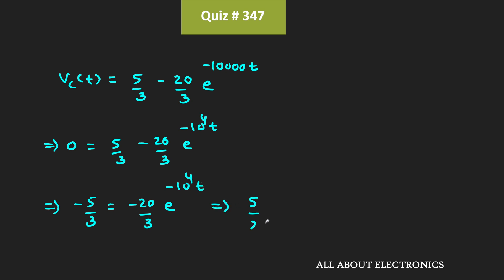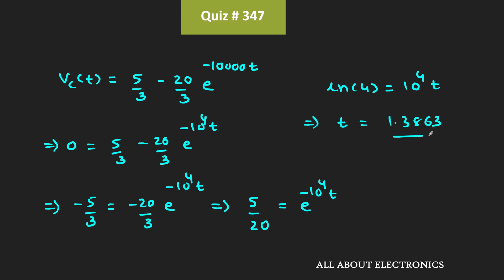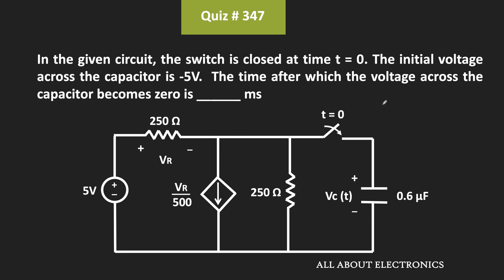Taking the natural log on both sides: ln(5/20) = -10^4 · t, so t = 1.3863 / 10^4 = 0.1386 ms. So after this time, the voltage across the capacitor will become 0. The answer for the given question is t = 0.1386 ms.